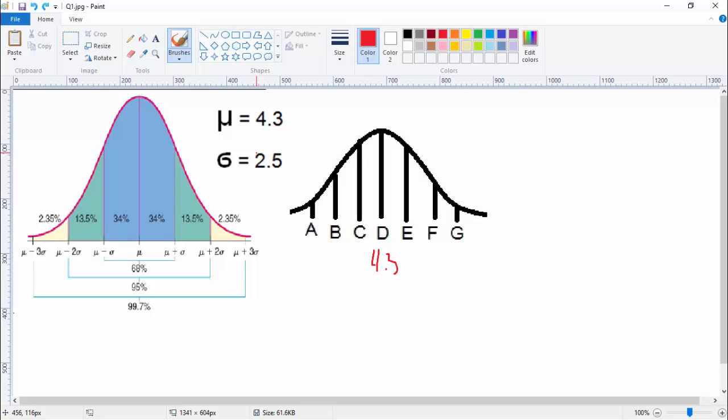And if you have that, you can take this mu here and add one of those standard deviations, and you'll get a number up there. So let's do that. That's 4.3 plus 2.5, which is 6.8. So this E here would be 6.8, right?